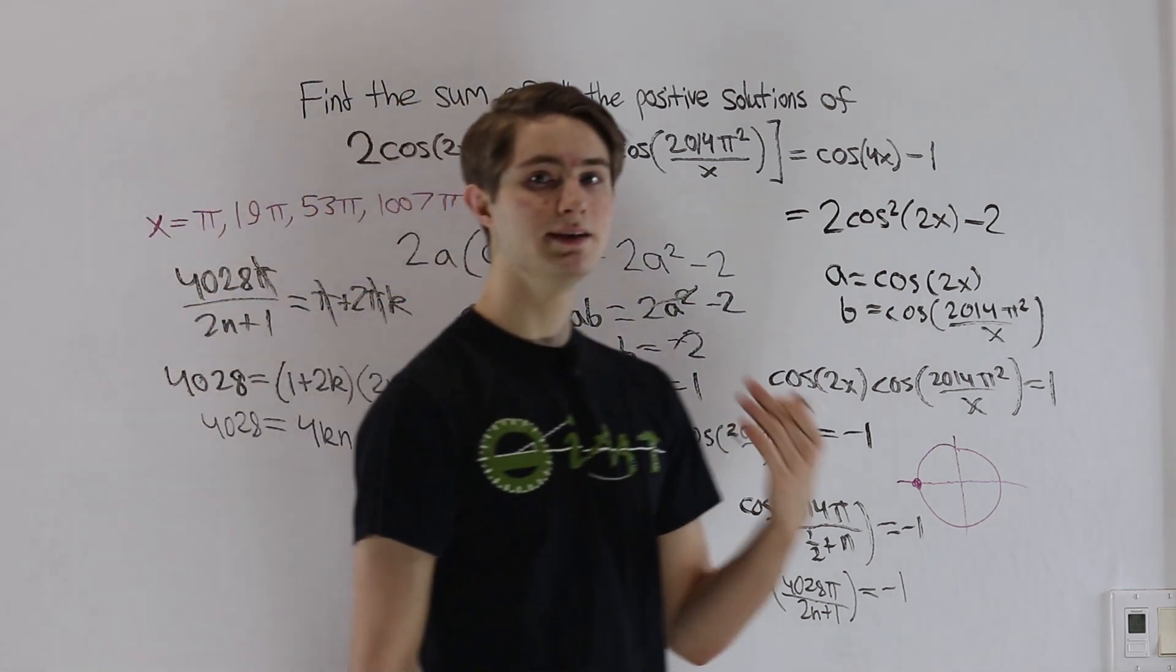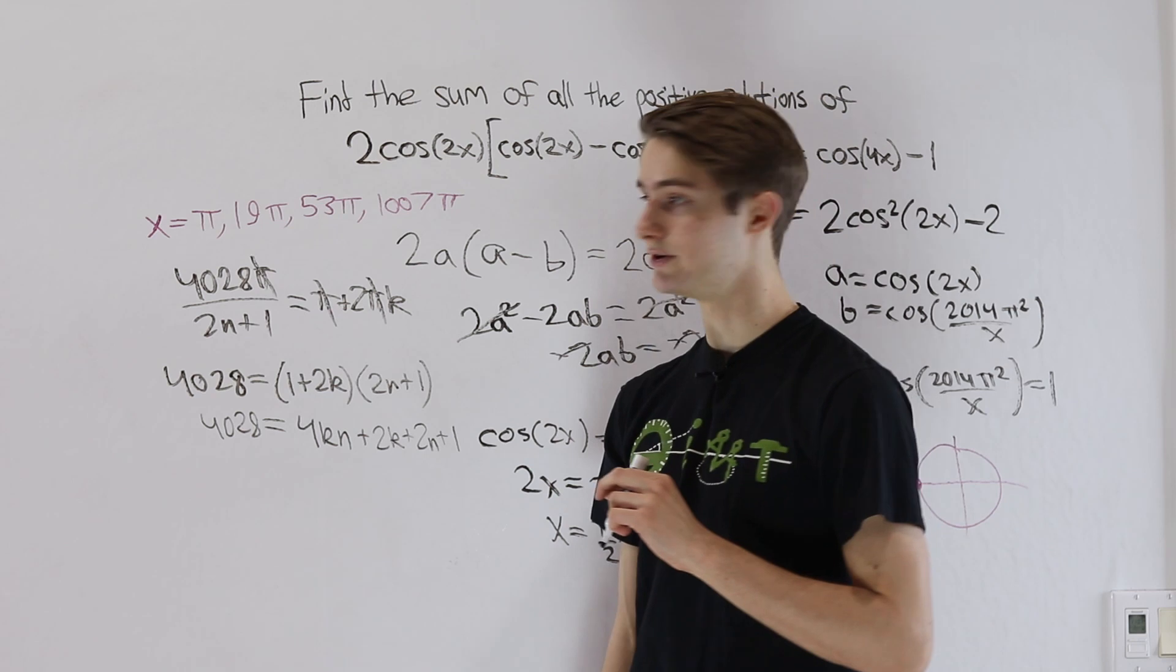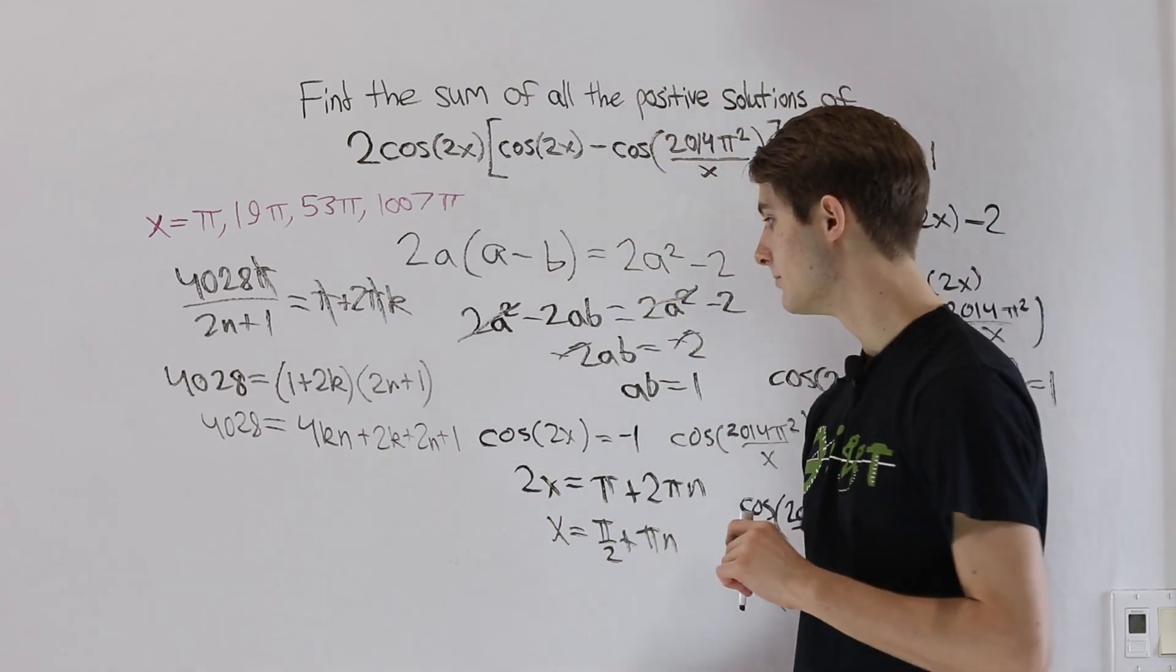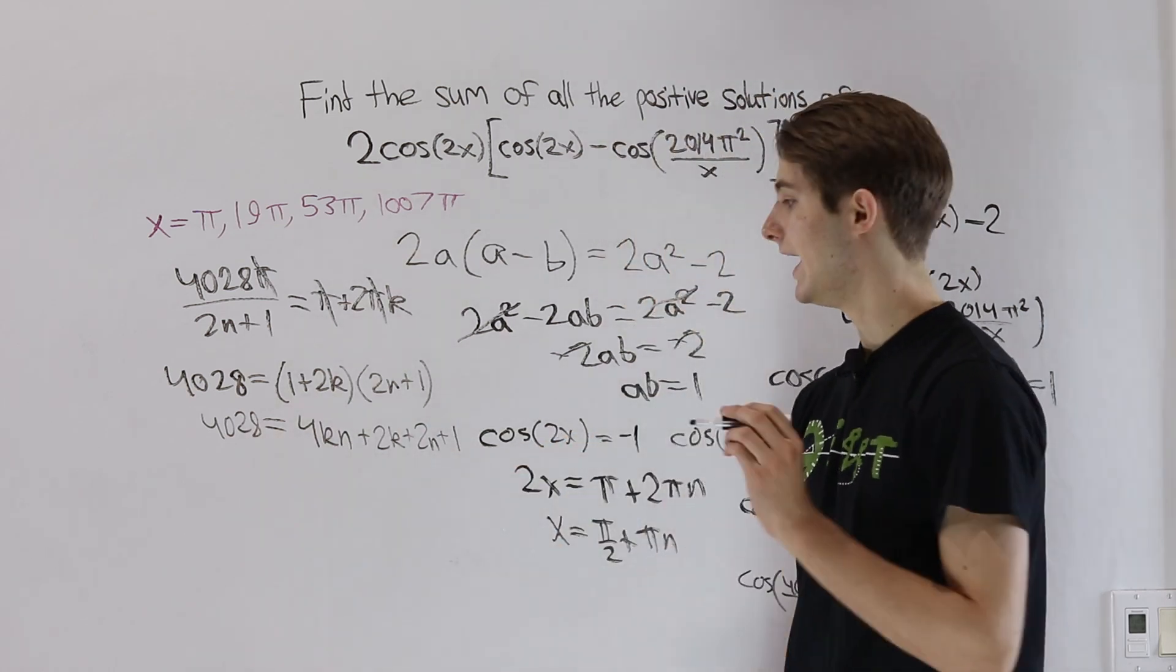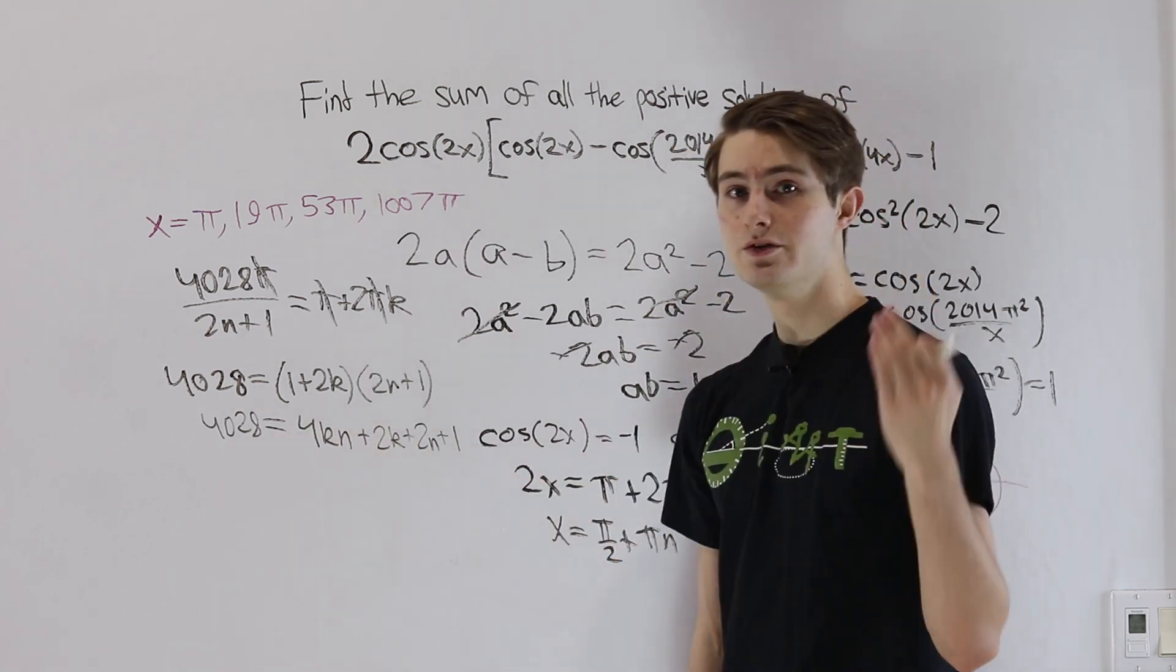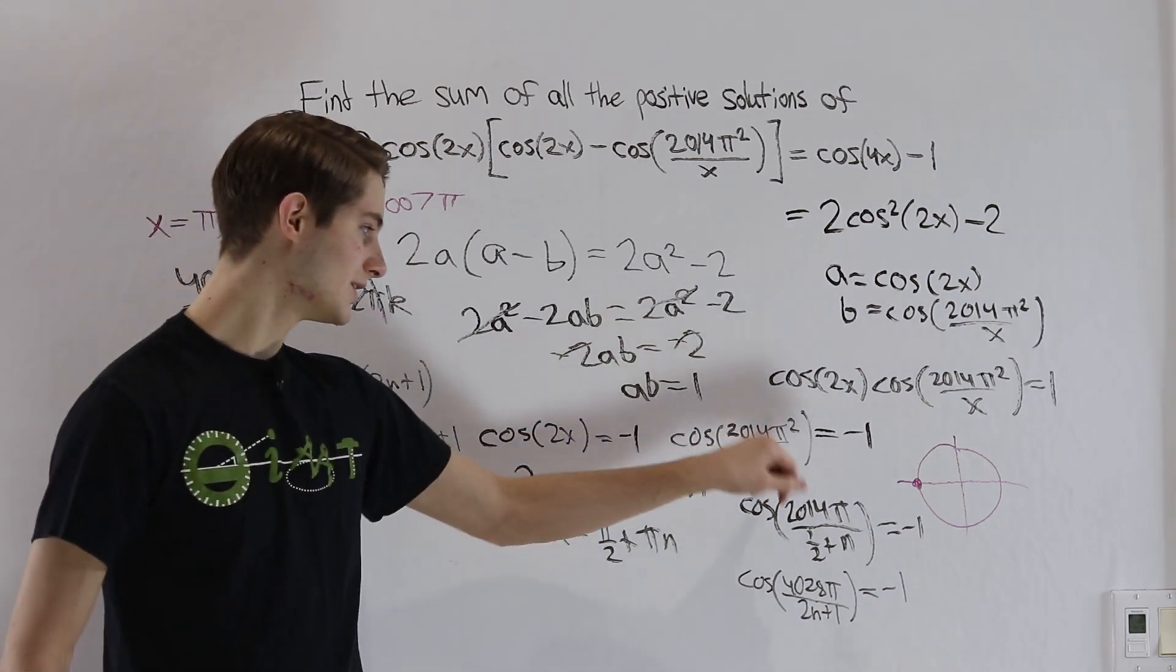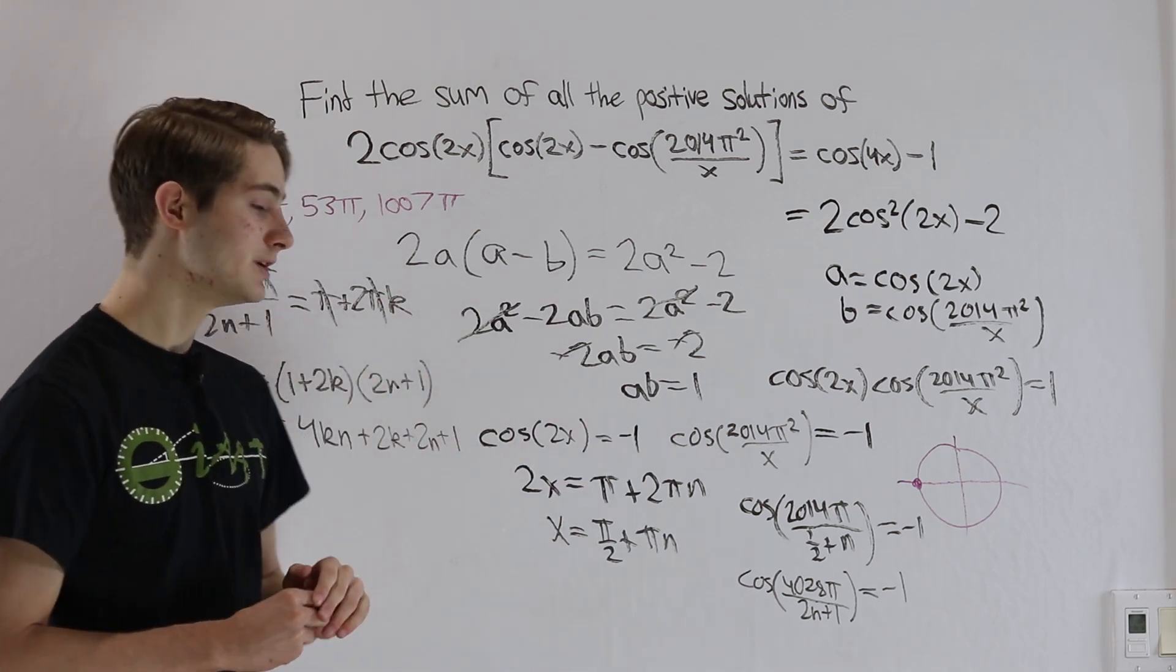Here's the question, if k and n are both integers, is this ever possible? The answer is no, and the reason is that 4028 is an even number. 4kn plus 2k plus 2n is also even, but then we have this plus 1 on the end. Which means that this right side, if k and n are both integers, has to be an odd number. 4028 is not an odd number, which means there are no integers k and n that satisfy this equation. That means that it's not possible for us to get cosine of 2x and cosine of this input to both equal negative 1. There are no solutions on this side, so we actually don't have to worry about it.